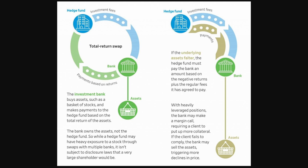I wouldn't be surprised if we see more family offices crumble under the same sort of pressure that Archegos did, as well as the additional pressure of collateral management that's having to happen from phase six. The funds doing uncleared derivatives right now are probably struggling and I think are on the edge of their seats.